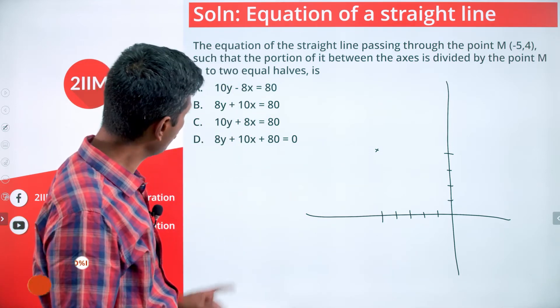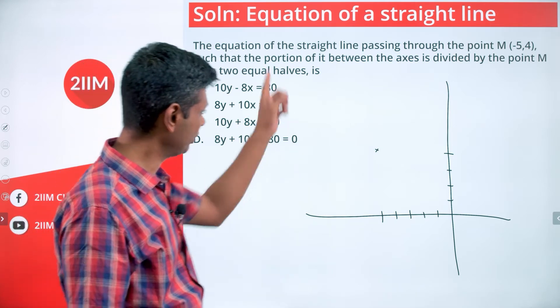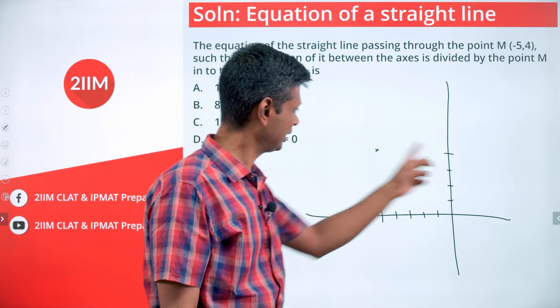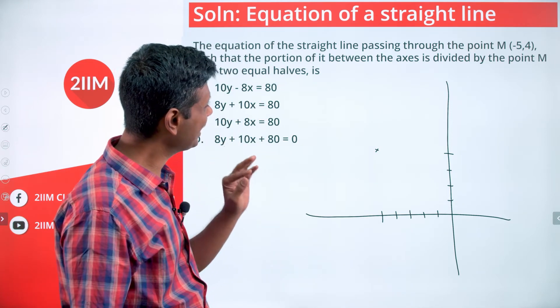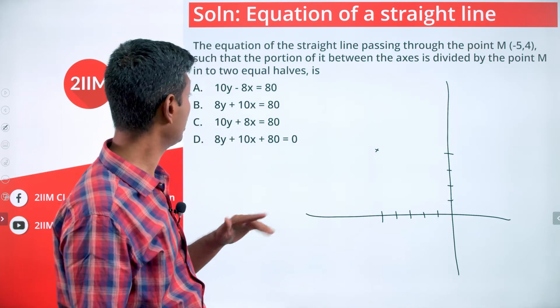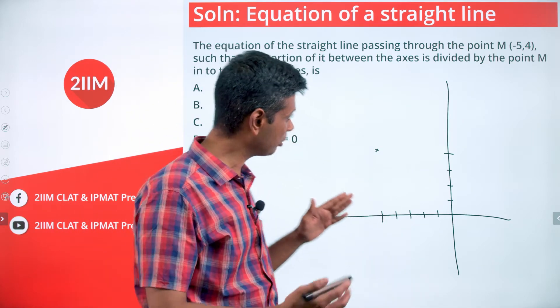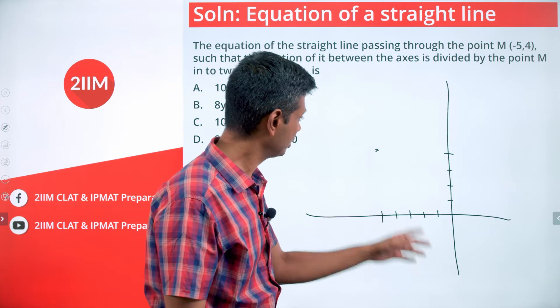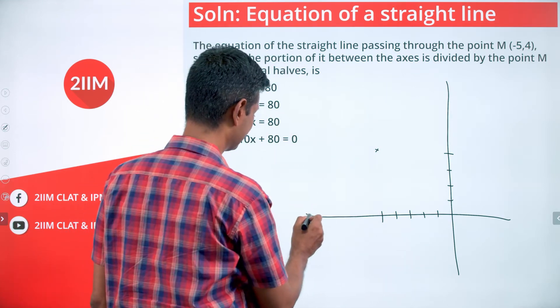Such that the portion of it between the axes is divided by the point M into two equal halves. The line could be like this, like this, like this, but the portion of it between the axes is divided by the point M into two equal halves. If we are like this, then the part between the axes would be here. This point won't be dividing it into two equal halves.